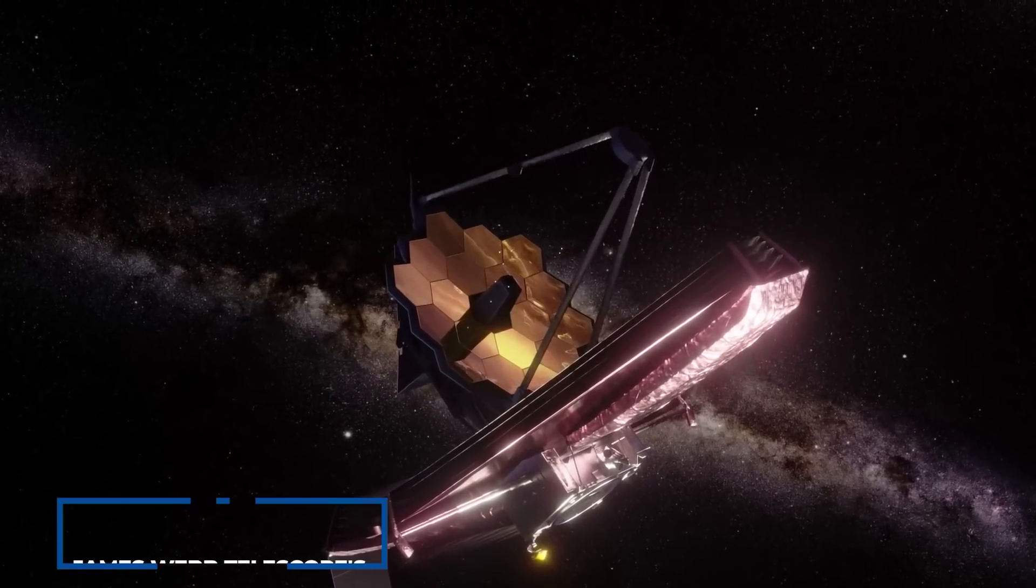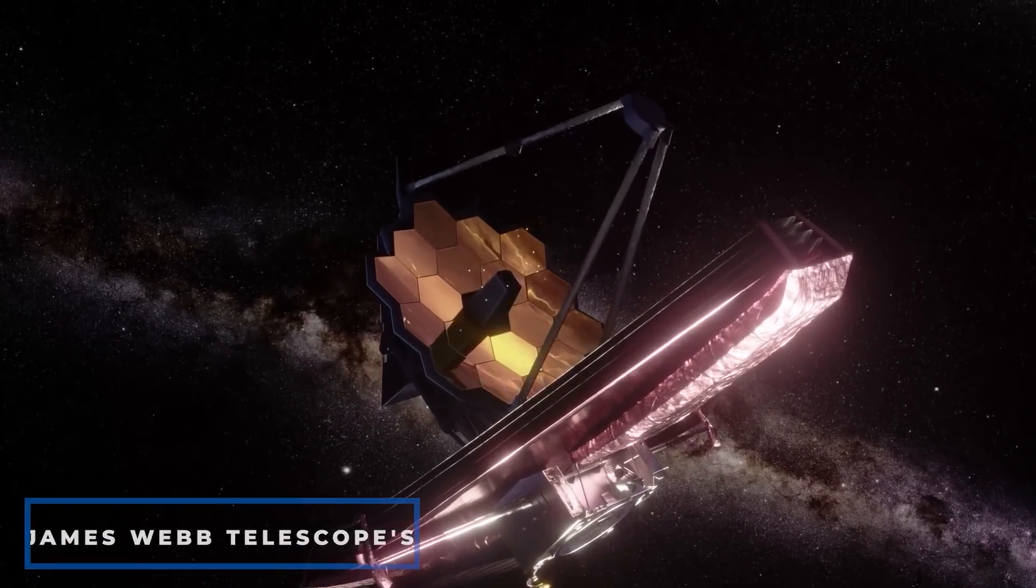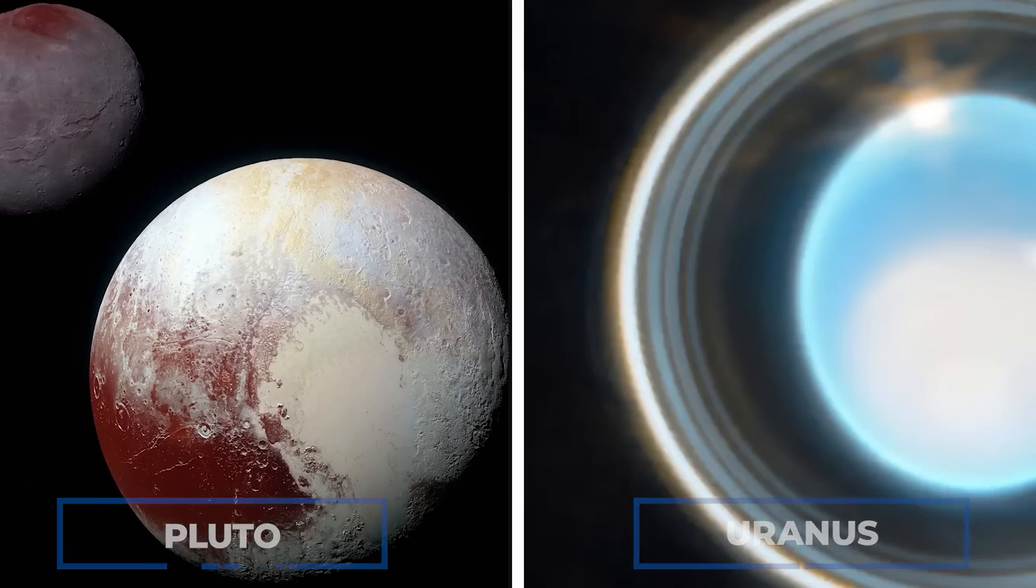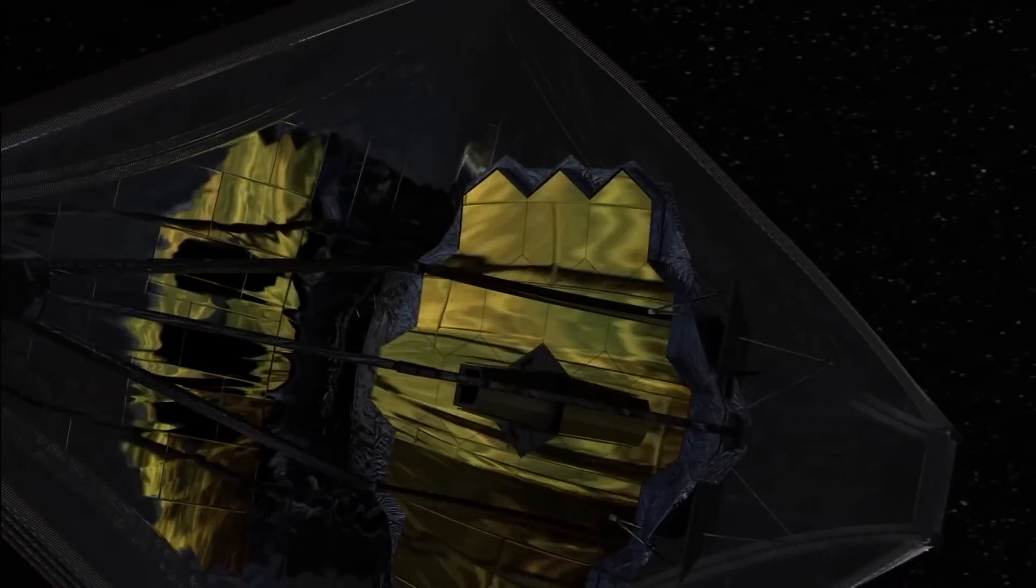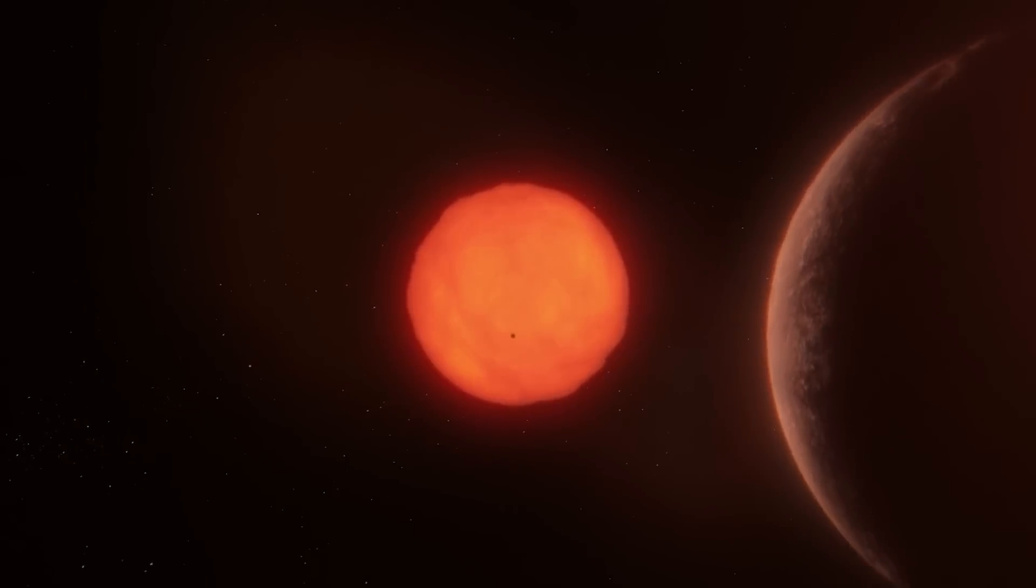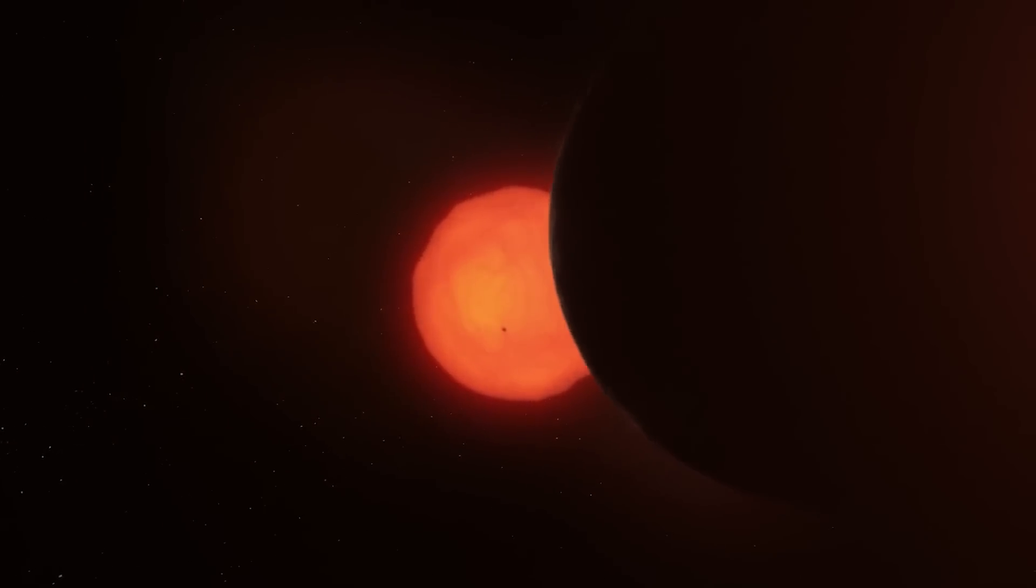And now, the unveiling of the James Webb Telescope's most incredible images of Uranus and Pluto to date by renowned physicist Michio Kaku has opened up a whole new world of secrets and mysteries that were previously beyond our wildest imagination. What has the JWST revealed about these planets, and what does it mean for future studies? Let's find out!